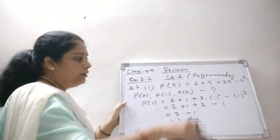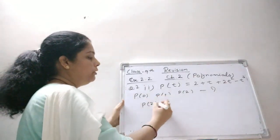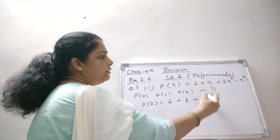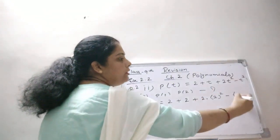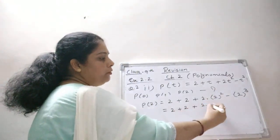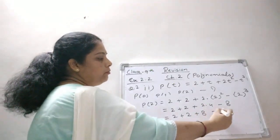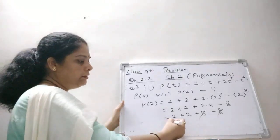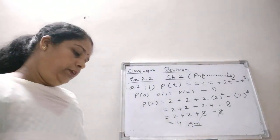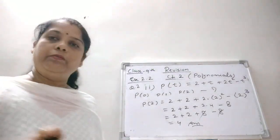Now find P(2): put t = 2. That gives 2 + 2 + 2 × 2² minus 2³ = 2 + 2 + 2 × 4 minus 8 = 2 + 2 + 8 minus 8. The plus 8 and minus 8 cancel, giving 4. So P(2) = 4. Your revision of exercise 2.2 is now completed. In the next module, we will revise exercise 2.3, which is the remainder theorem. Thank you.